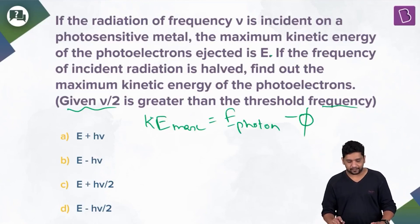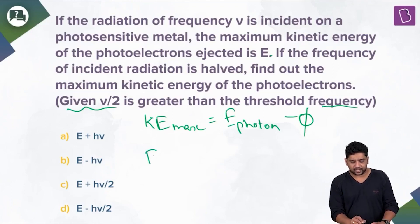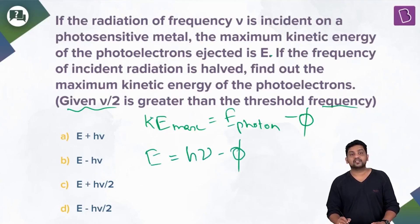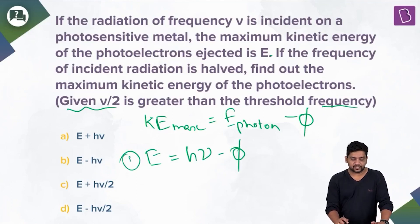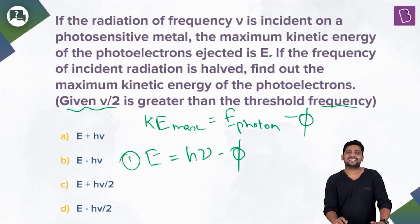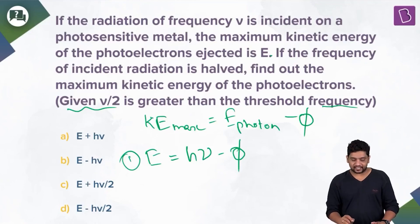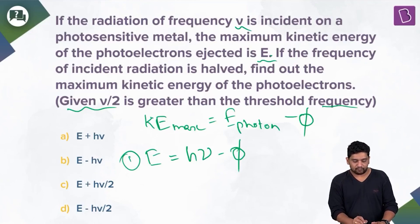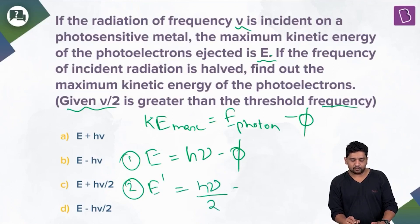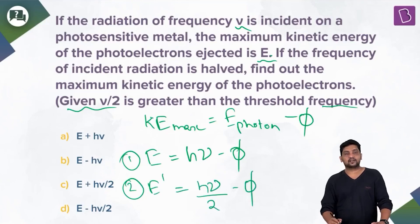So we can say E = hν − φ. This was our first case where ν is the frequency; hν is the energy of the photon minus work function φ, giving us kinetic energy E. Now we need maximum kinetic energy E′, which equals hν/2 − φ.